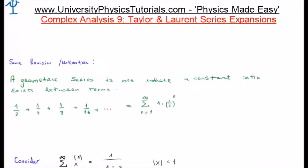I'd like to do some revision or motivation. A geometric series is one where a constant ratio exists between all the terms. Consider for example 1 half plus 1 quarter plus 1 eighth plus 1 sixteenth and so on.